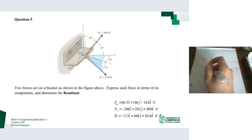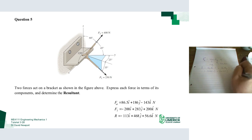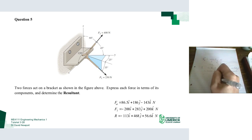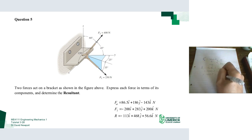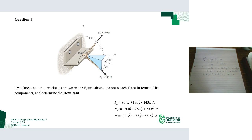Plugging in the angles, we get cosine(120°) i-hat plus cosine(45°) j-hat plus cosine(60°) k-hat. Evaluating those gives minus 0.5 i-hat plus 0.71 j-hat plus 0.5 k-hat. Remember there are no units on this, because it is simply a direction.